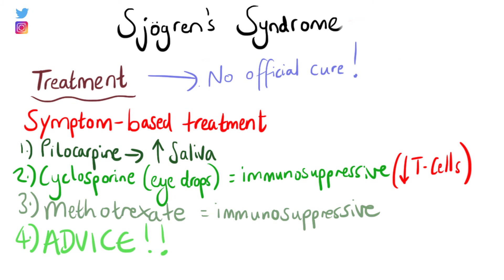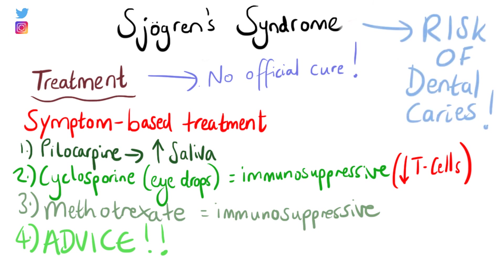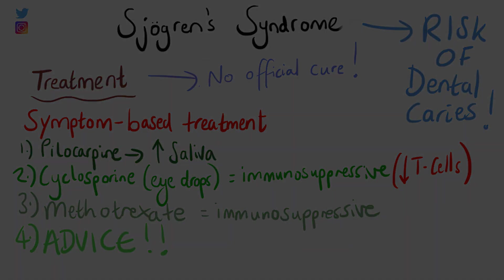There are dental implications with Sjogren's syndrome as well. Xerostomia increases the risk of dental caries because saliva acts as a buffer against the acid produced by bacteria in the mouth. With less saliva, the acid in the mouth is not neutralized, putting the patient at greater risk of dental caries.